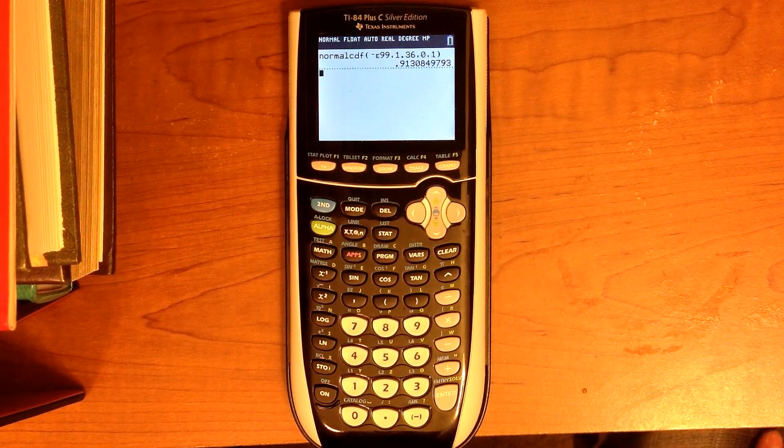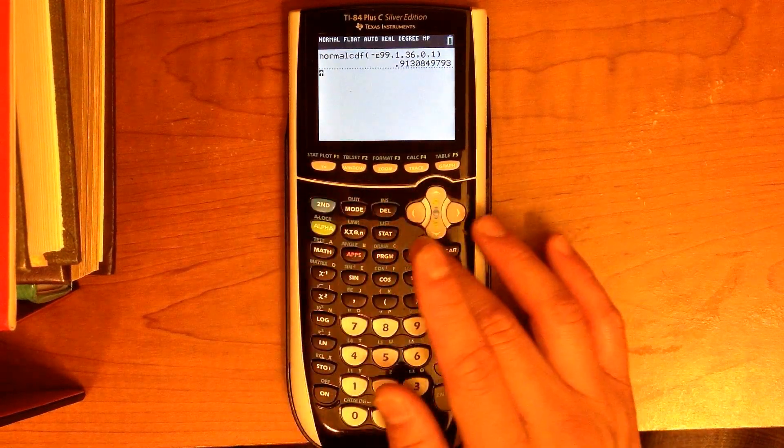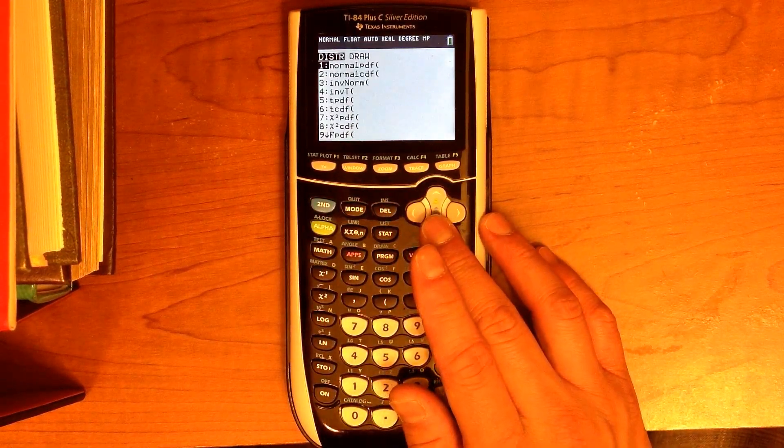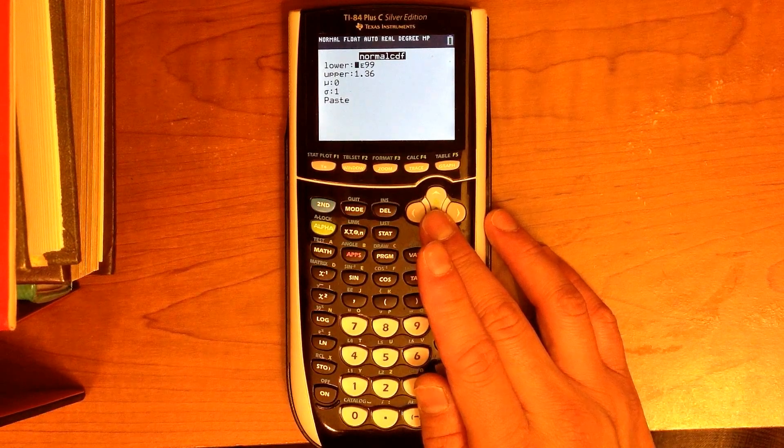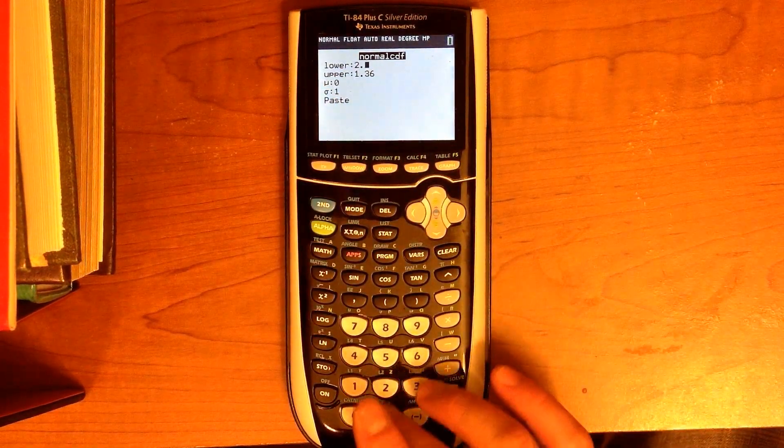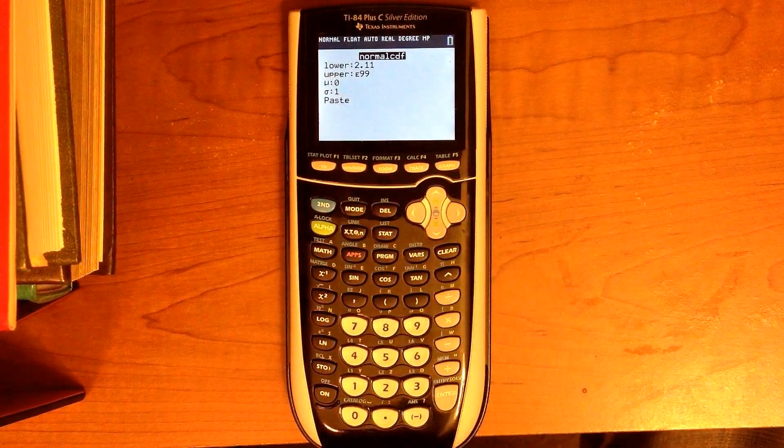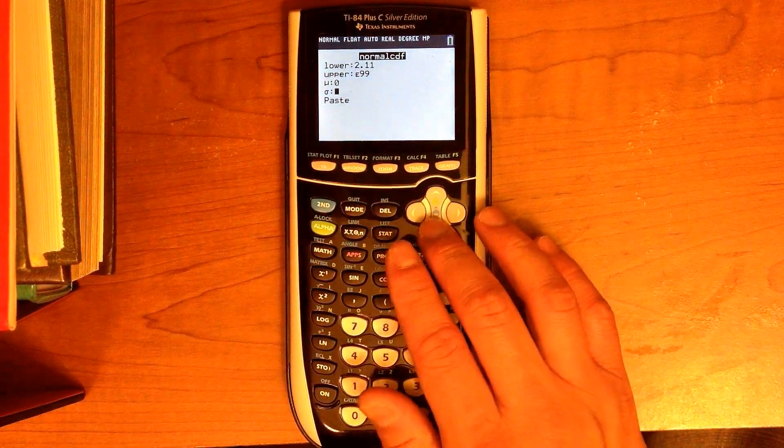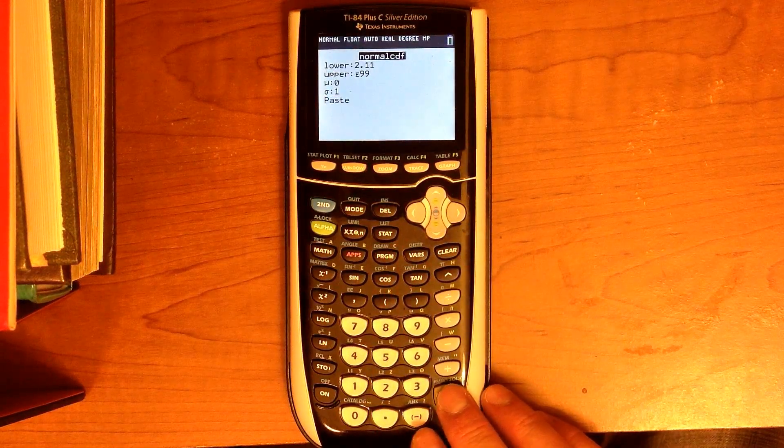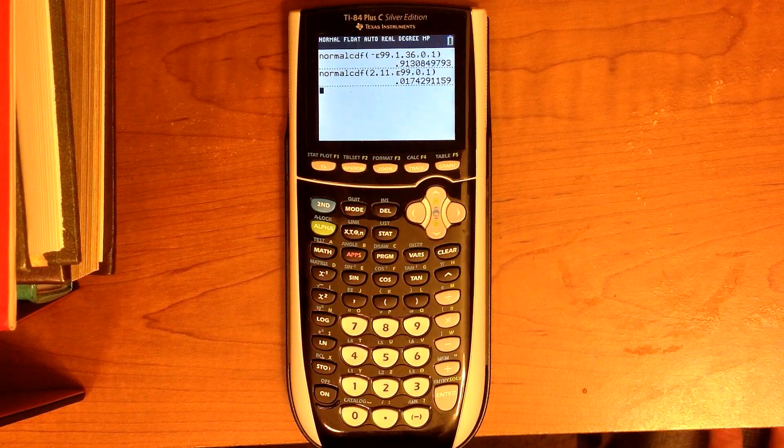Let's try number 13. More than 2.11 standard deviations above the mean. So now we are going to use normal CDF, but now we are going to go to the right of 2.11. So our lower limit is 2.11, our upper limit is E to the 99th, a very large positive number. We're going to keep the parameters for the mean and standard deviation the same. And you will see that this proportion is 0.0174.